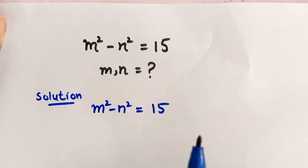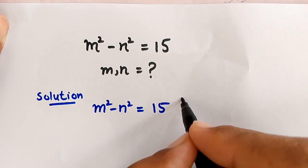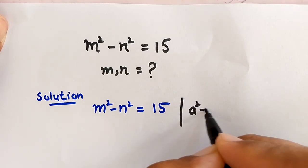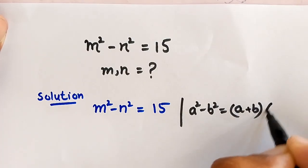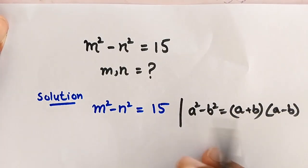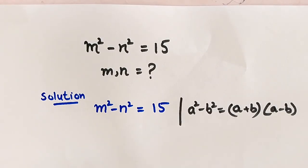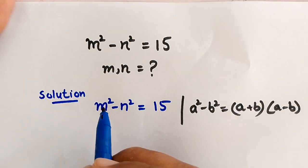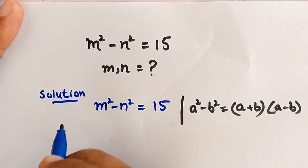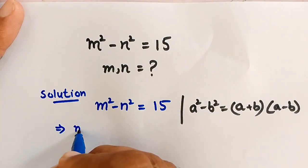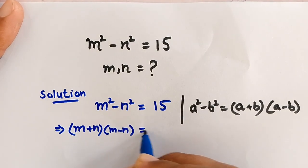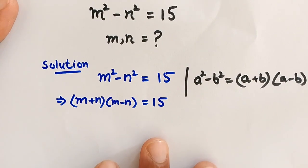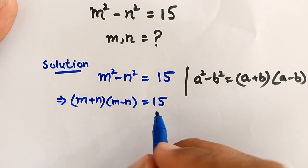To solve this question, we know that m squared minus n squared is in the form of a squared minus b squared, which is equal to (a+b)(a-b). We apply this identity here, so this becomes (m+n)(m-n) = 15.